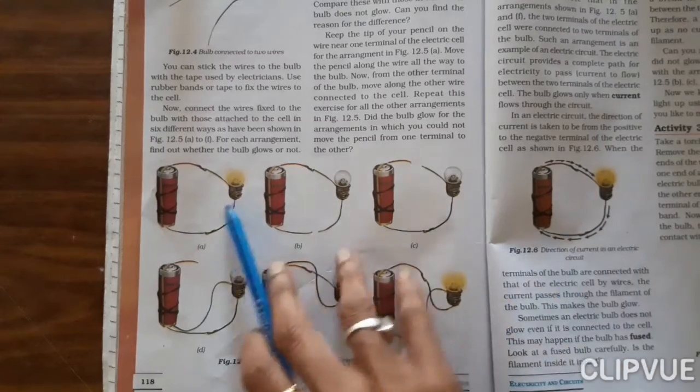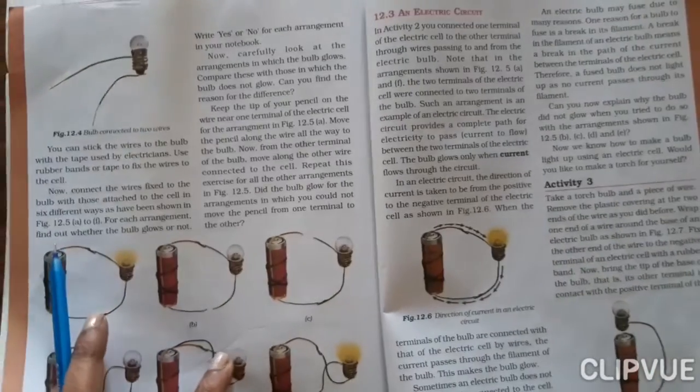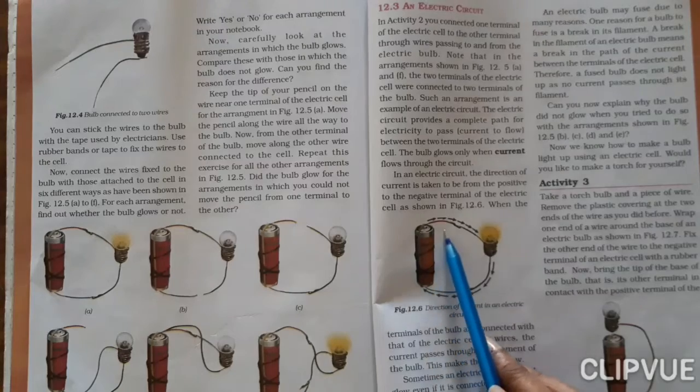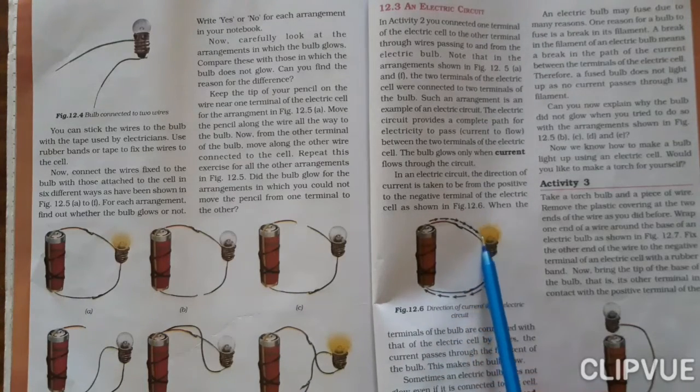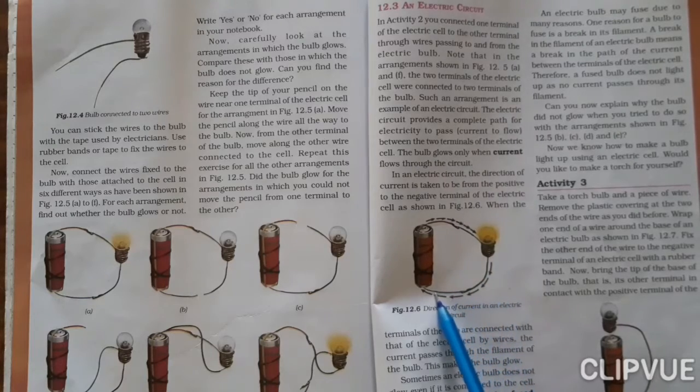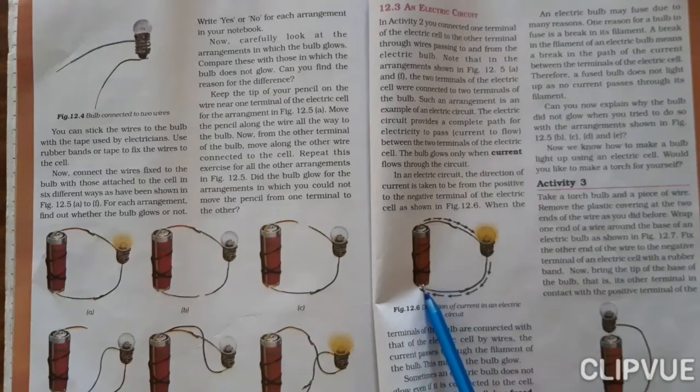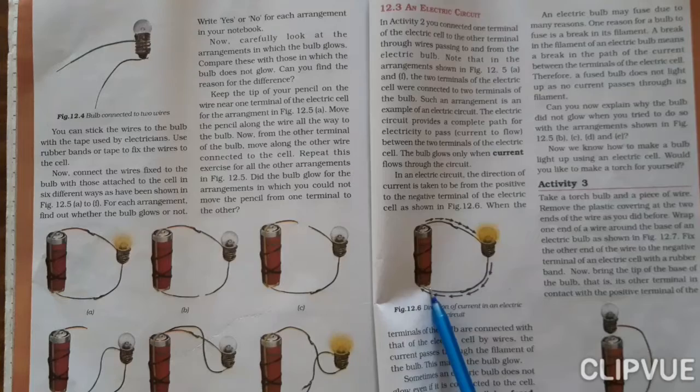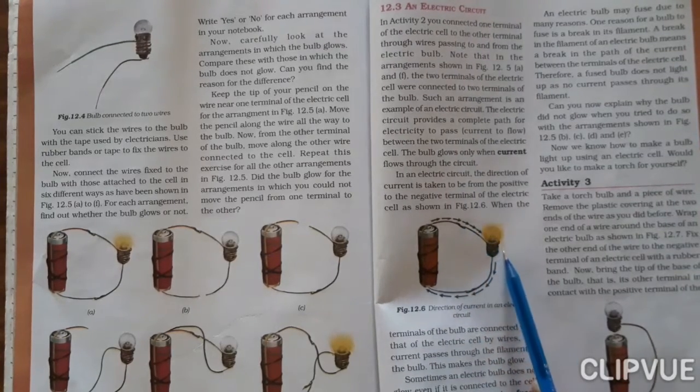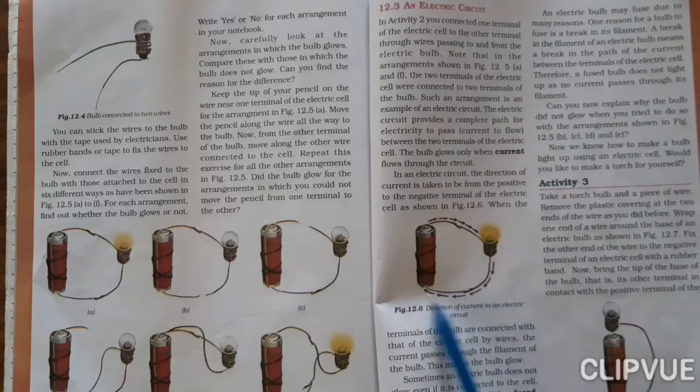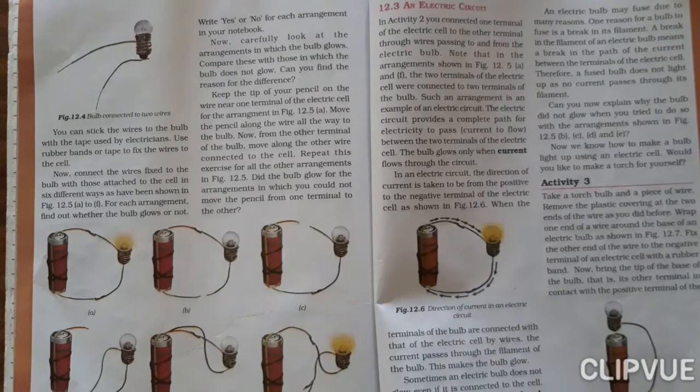Now what is the path of flow of current? Current always flows from positive terminal to negative terminal. Always please remember this, that current will always flow from positive terminal to negative terminal. Thank you.